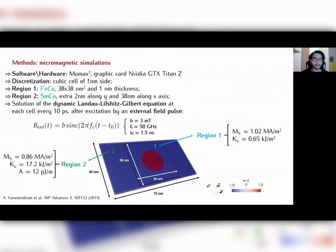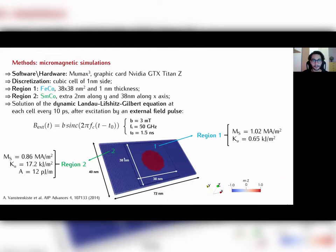Regarding the methods we adopted, we used MuMax3 as software — it is a GPU-based software, so we used a quite performant graphics card. Here we can see the simulated area for the one-skyrmion system.